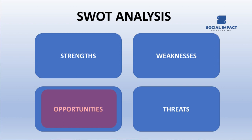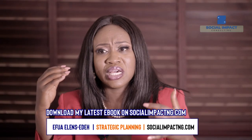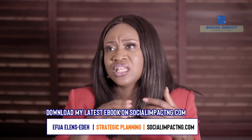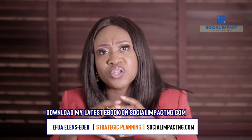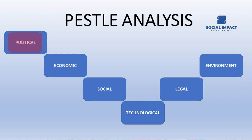You can also do a PESTLE analysis if you've not done that in your initial five-year strategic plan — that's political, economic, social, legal, and environment. The political environment right now in Nigeria: there's the social media bill, hate speech legislation, and some human rights issues in the political arena, so it may affect the kind of messaging that you provide. Then economically, inflation is ongoing — 20,000 Naira in 2014 is very different from 20,000 Naira in 2020.